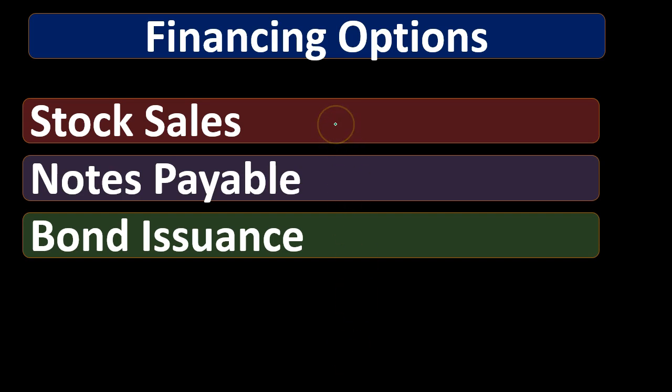Stock options give the idea that we can issue stock and therefore give some ownership in the company in exchange for capital. There are pros and cons to issuing stock. Stock, of course, is only something that can be done for a corporation — a sole proprietor can't issue stock. The downside is that you're giving away voting power and some decision-making, as well as claims to future revenue generation.